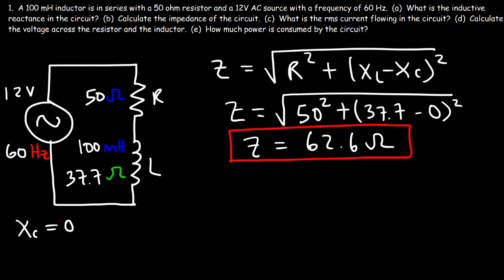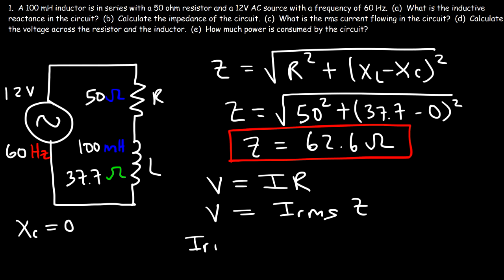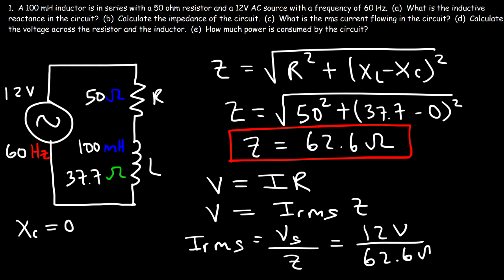Now let's move on to Part C: what is the RMS current flowing in the circuit? V equals IR, but here V equals the RMS current times the impedance. So the RMS current is the source voltage divided by the impedance — 12 volts divided by 62.6 ohms. The current flowing in this circuit is 0.1917 amps.